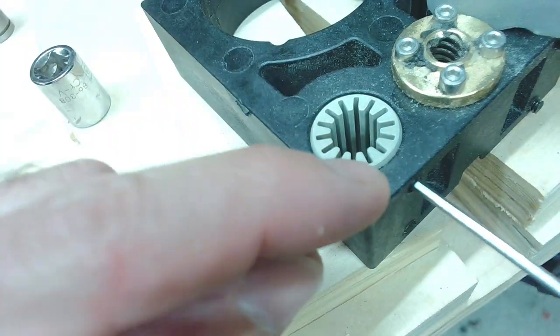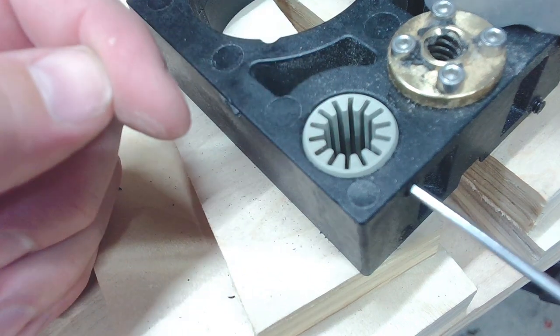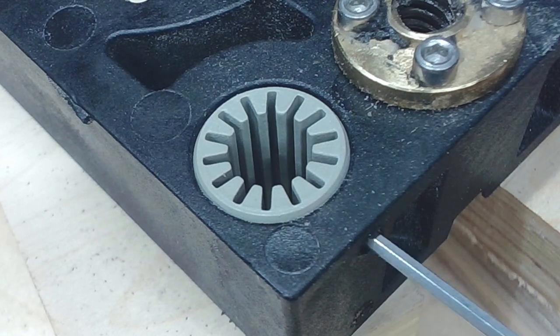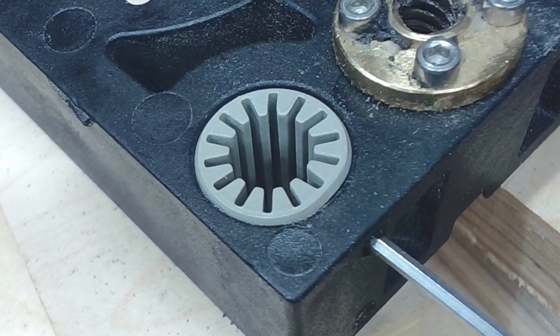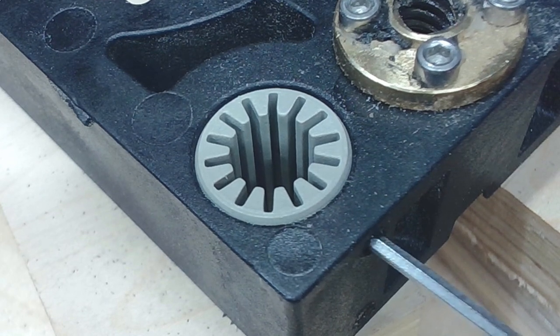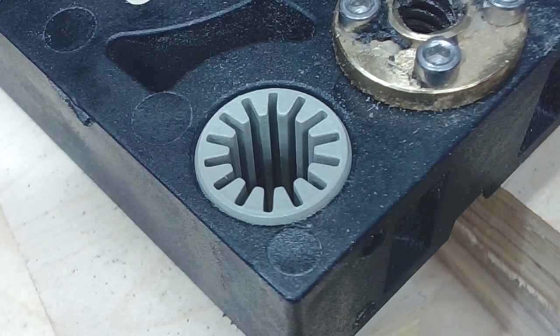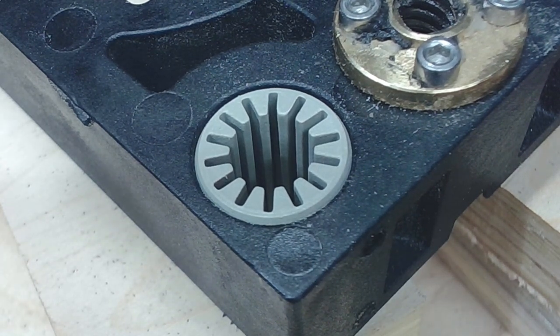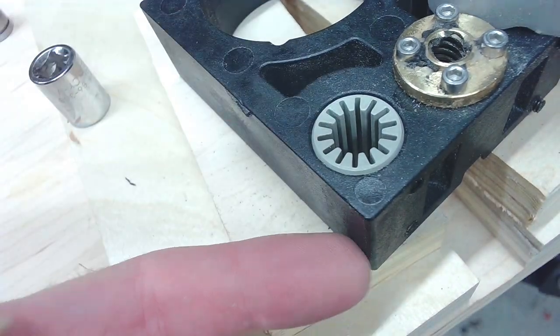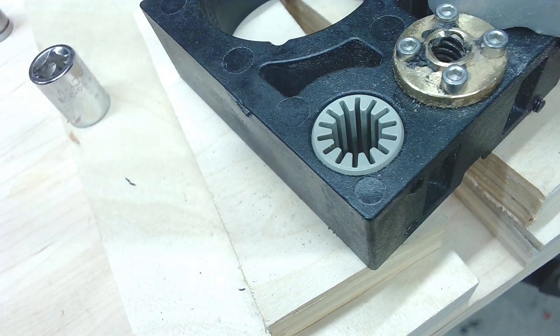As you notice in here, it starts to deform right inside there. That's clearly too much tension. I'm just going to back it out to right about that point where it's not actually squeezing it in too much. Now it's just a matter of repeating this process on the bottom for that set screw, and then the same exact thing for the opposite side.